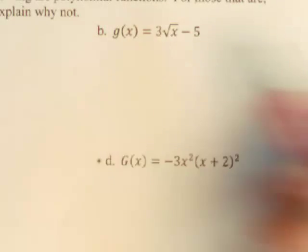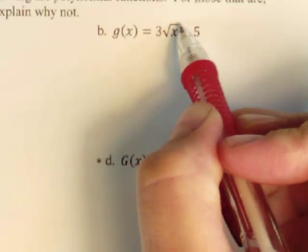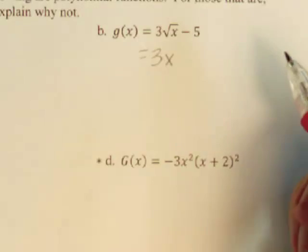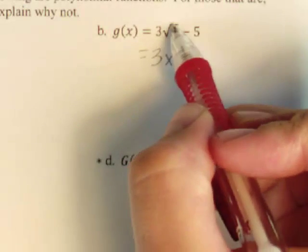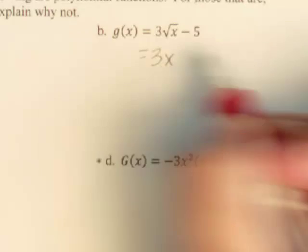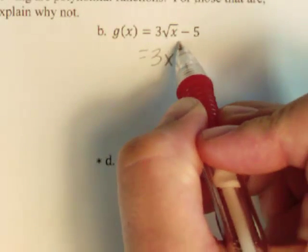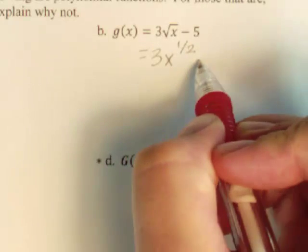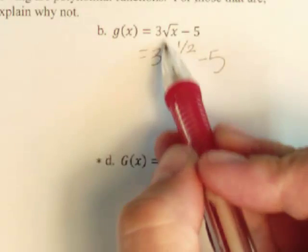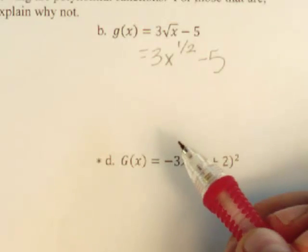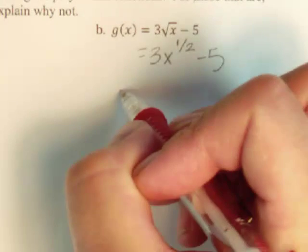For letter B, if I were to rewrite the square root, remember from Math 95, when we have a square root of x, that we can rewrite as a fractional exponent. And it looks like this. So the square root of x is the same thing as x to the one-half power. So because of that, this is not a polynomial.